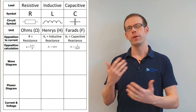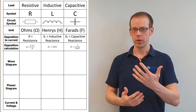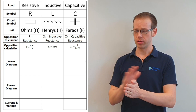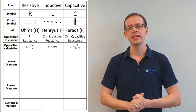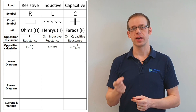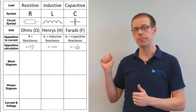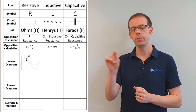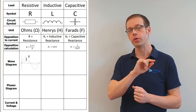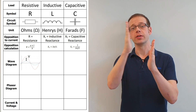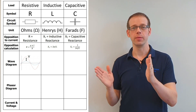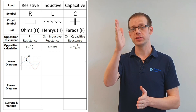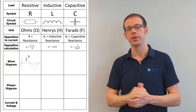We then considered how voltage and current behave when these three types of load are connected. In a purely resistive load — one with no capacitance and no inductance — the voltage and current are in phase. On the wave diagram, all key points are reached at the same moment: when the voltage is at zero, the current is at zero; when the voltage is at its maximum positive peak, the current is also at its maximum positive peak.